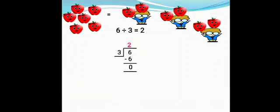There are 6 apples and 3 friends. If they share apples equally, each friend will get 2 apples each. 6 apples divided into 3 friends is equal to 2 apples each. We can write it as 6 divided by 3 is equal to 2, or we can write it like this also.